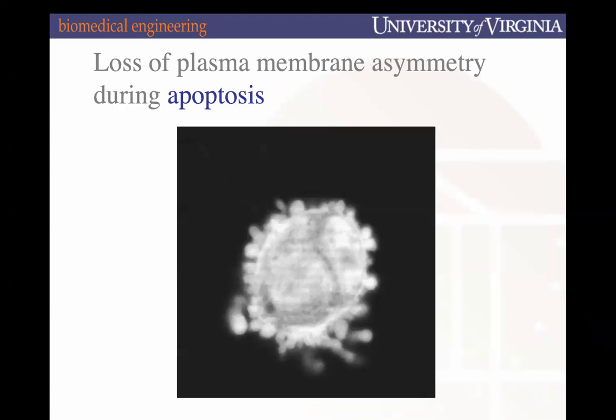Cells go through different kinds of death; one way is apoptosis — programmed cell death — which is associated with blebbing on the outer surface. One of the things that happens during apoptosis is that phosphatidylserine, this inner leaflet phospholipid, flips out and is now on the outer surface — the outer leaflet. Its presence on the outer leaflet is a sign indicating that this cell is undergoing apoptosis.